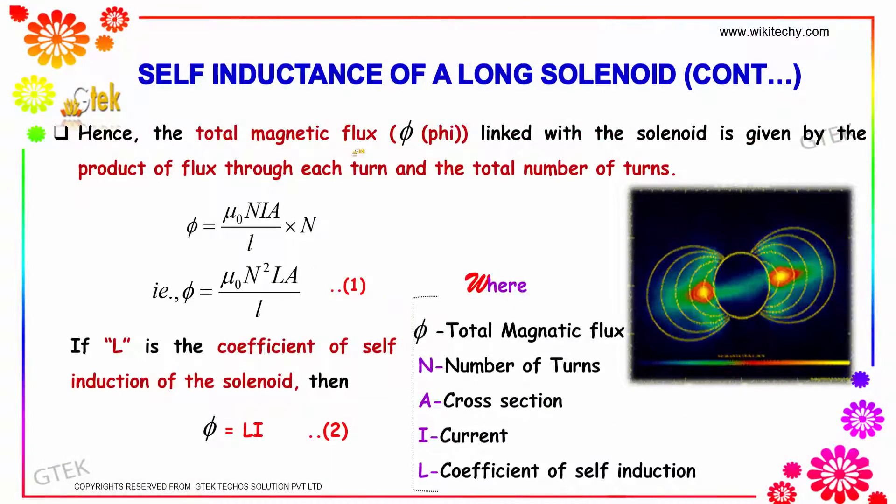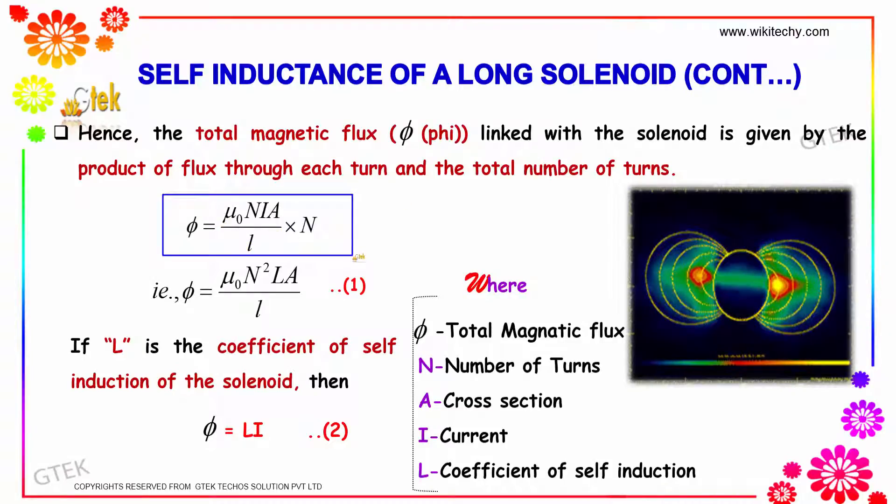Hence, the total magnetic flux φ linked with the solenoid is given by the product of the flux through each turn and the total number of turns. φ equals μ₀N²IA divided by L.